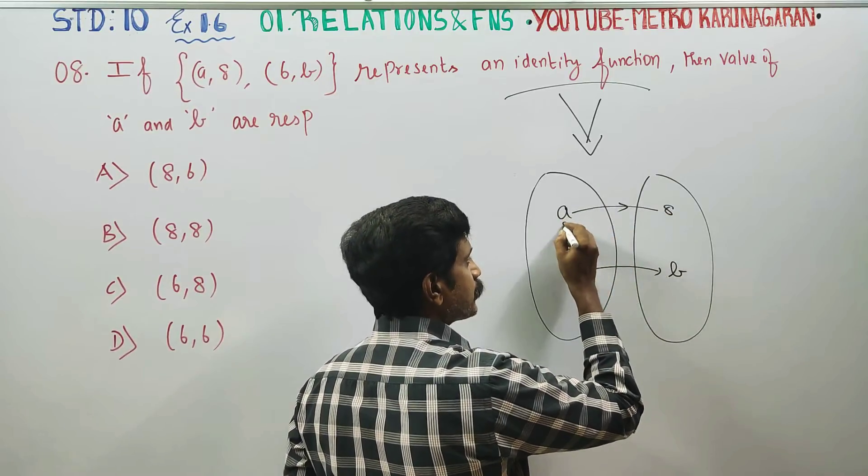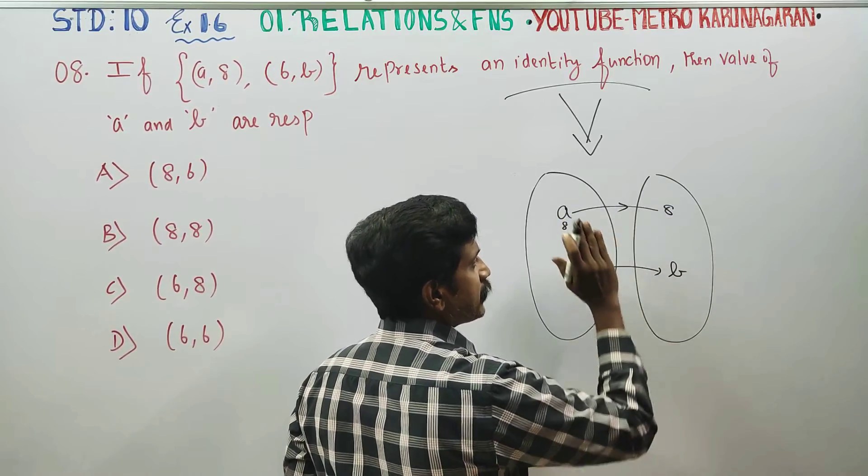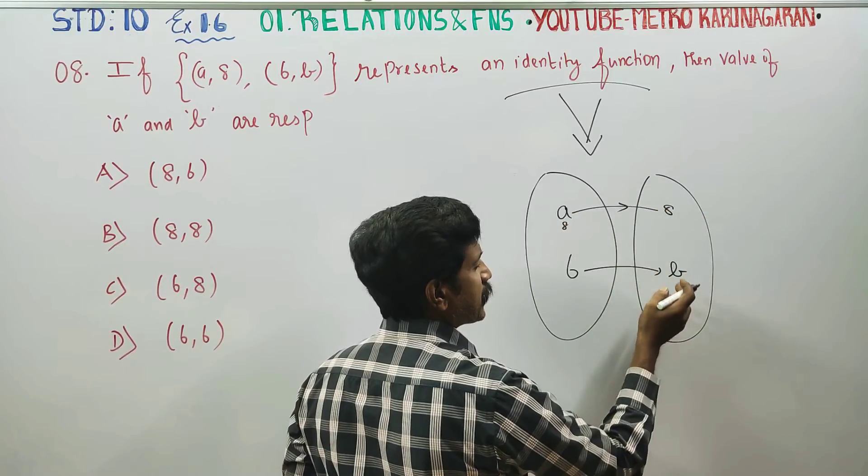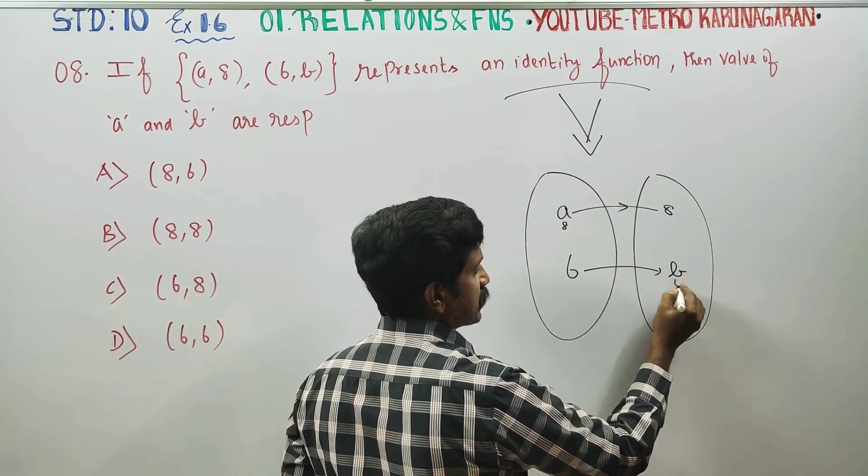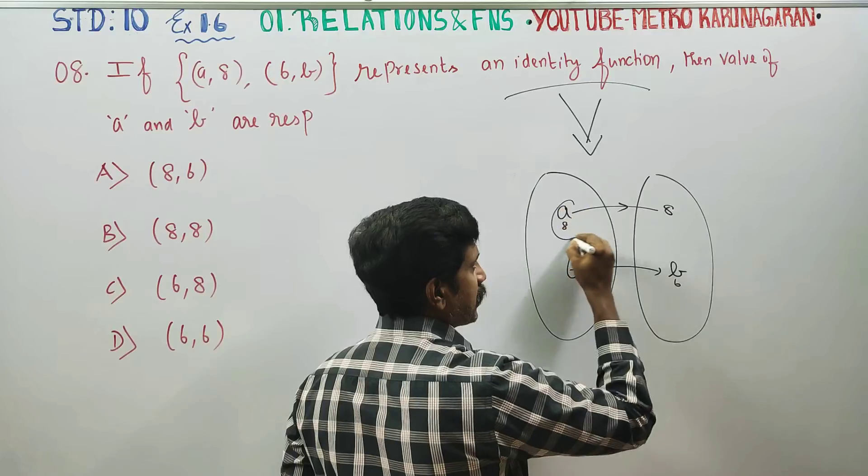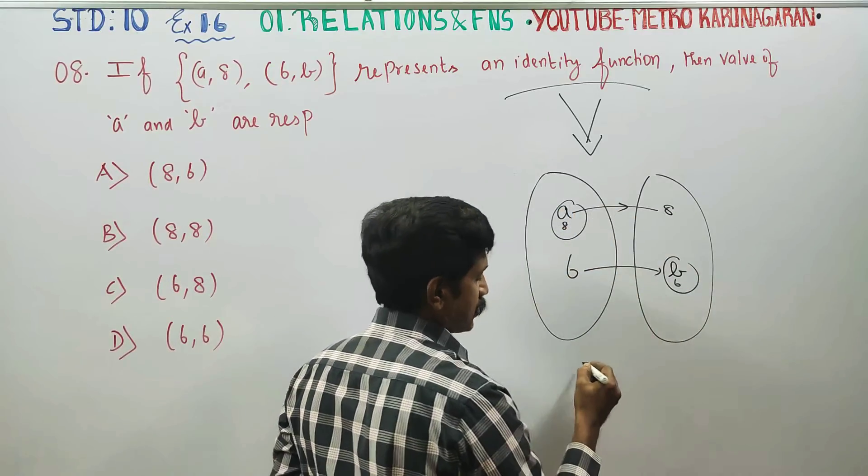So if 8 is here, it will be here. If 8 is here, 8 will be here. In identity, both should be same. Similarly, if 6 is here, 6 will be here. A's value is 8, that's it. B's value is 6, that's it.